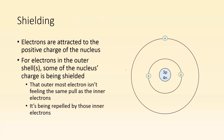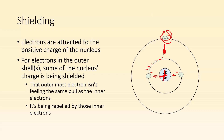We also have this thing called shielding, and it does pretty much what you think the word shield means. Electrons are attracted to the positive nucleus. Even a second energy level electron is being pulled towards the nucleus. But between that outer electron and the nucleus, there are inner electrons. Those electrons create a kind of negative shield around the nucleus, meaning the outer electron isn't going to feel the same pull towards the nucleus as the inner electrons.